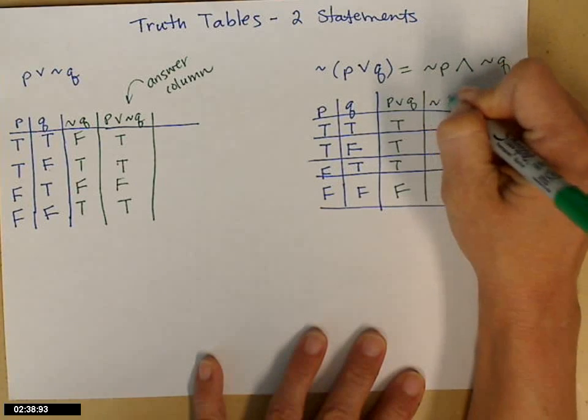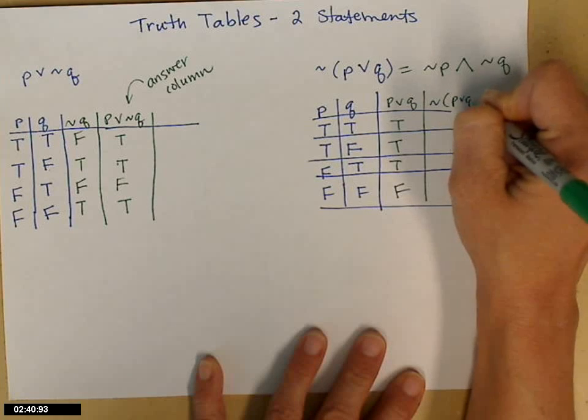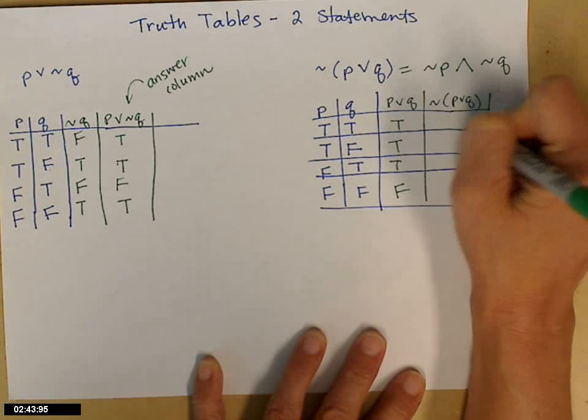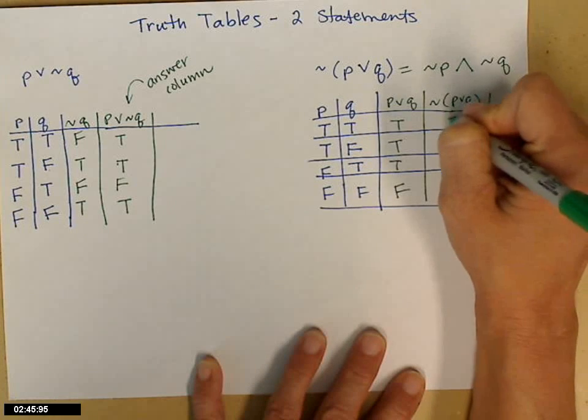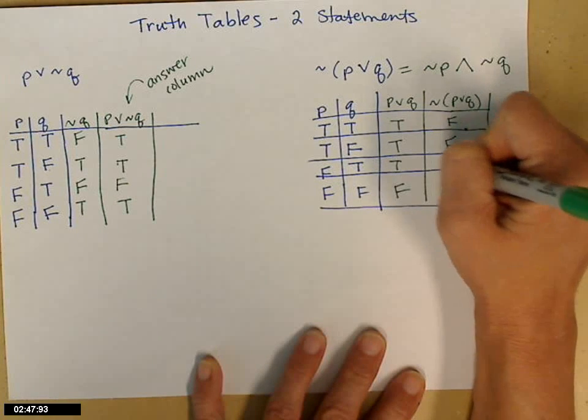And then the last thing, I have the not. So I'll just go through that column I wrote and change all the trues to falses and all the falses to trues. So false, false, false, true.